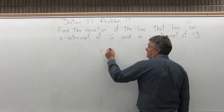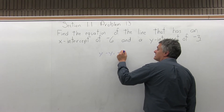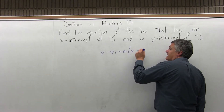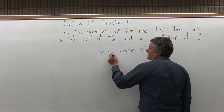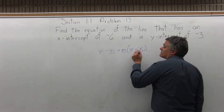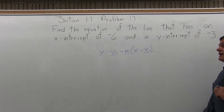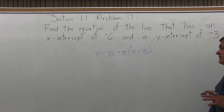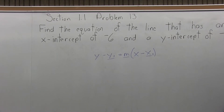we go to the formula y minus y1 equals m times x minus x1. We underline the values y1, m, and x1 — we have to put in a number value for those. We leave the rest of it the way it is so we can simplify it at the end.